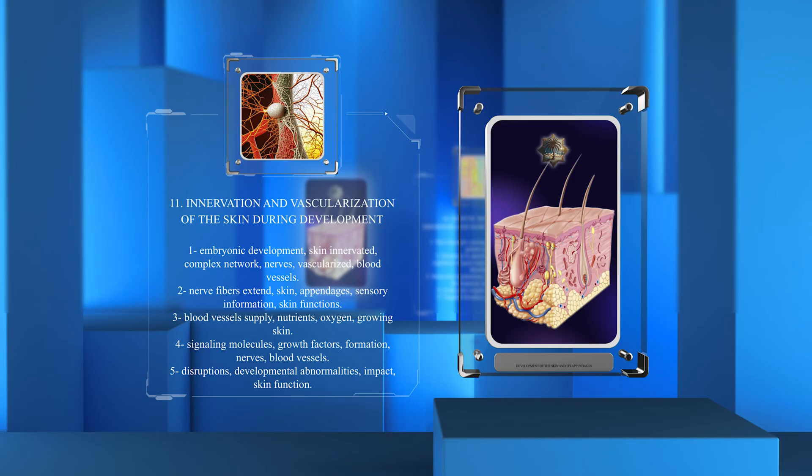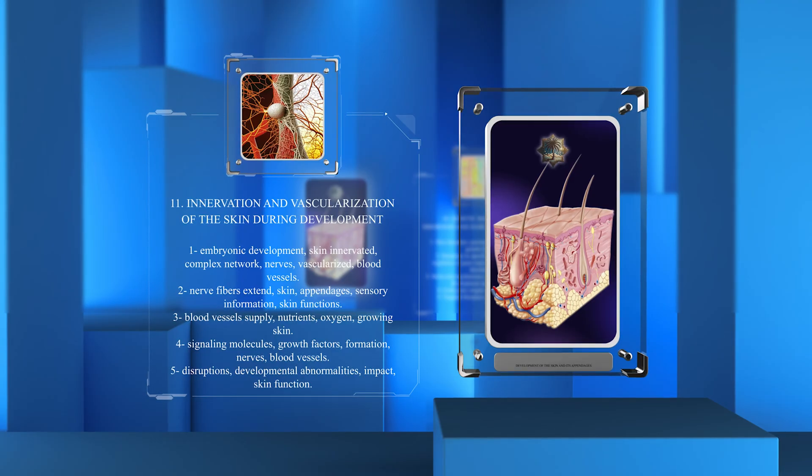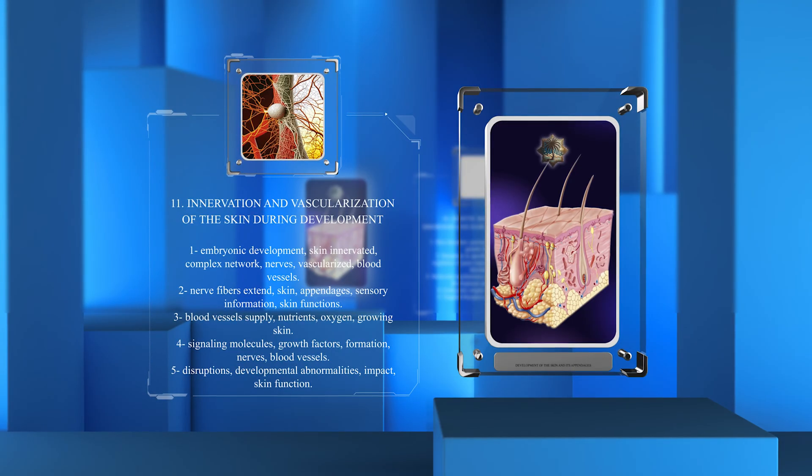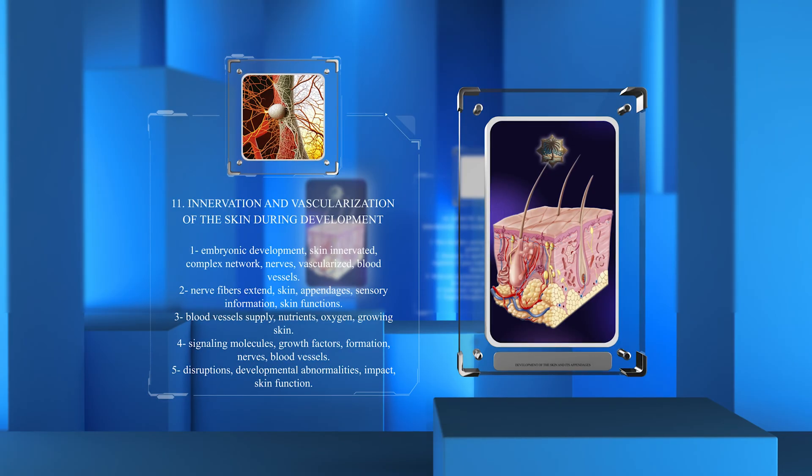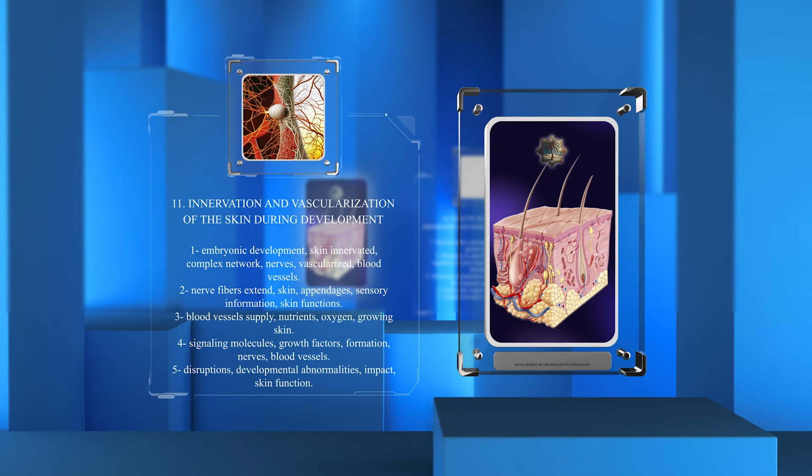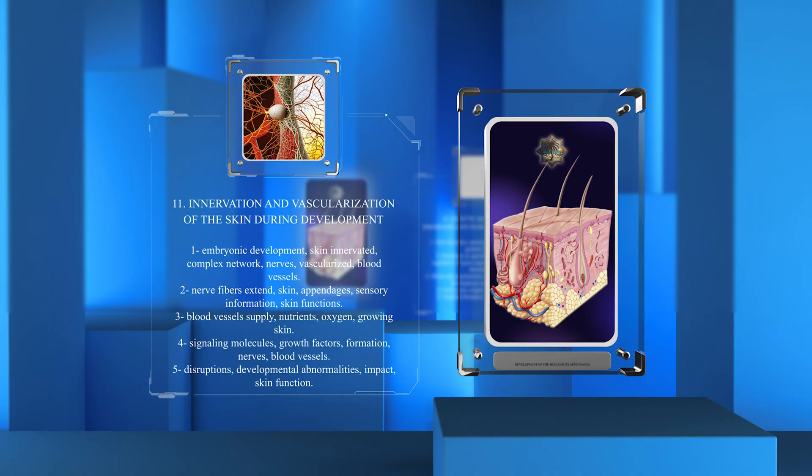Blood vessels supply nutrients and oxygen to the growing skin. Signaling molecules and growth factors play crucial roles in the formation of nerves and blood vessels. Disruptions in these processes can cause developmental abnormalities and impact skin function.